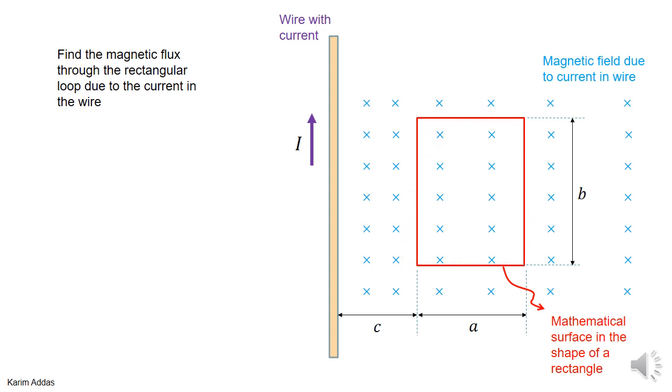So this is just a mathematical surface, mathematical outline. So we want to get integration of B dot dA through this rectangle. Now, what's the direction of the area vector?